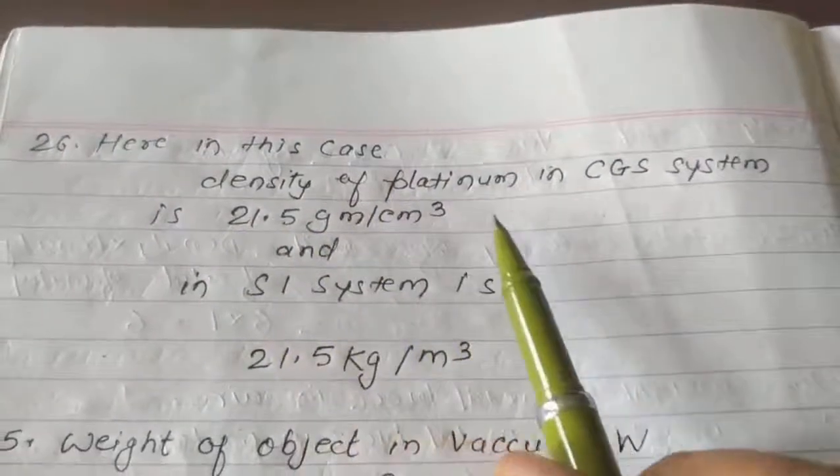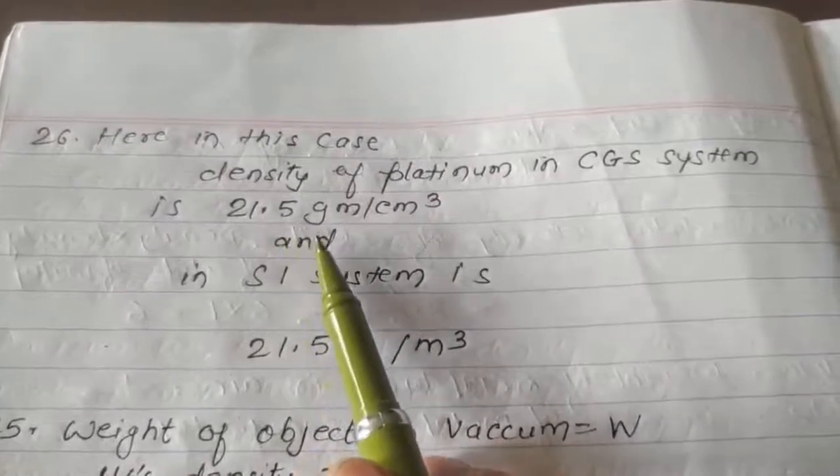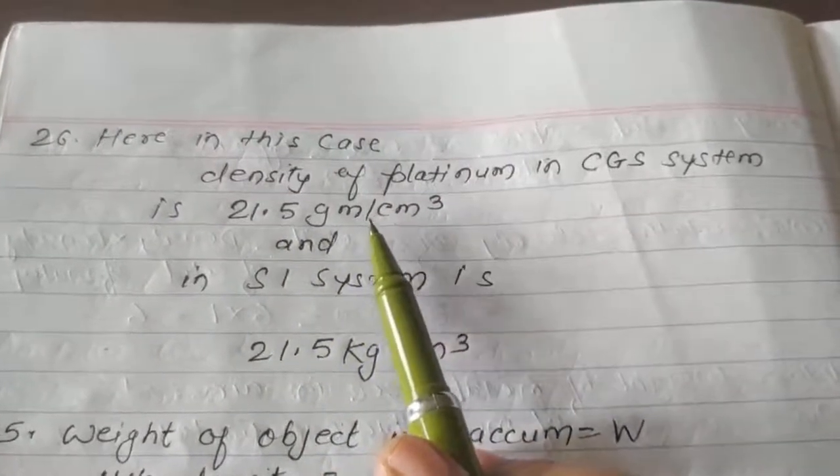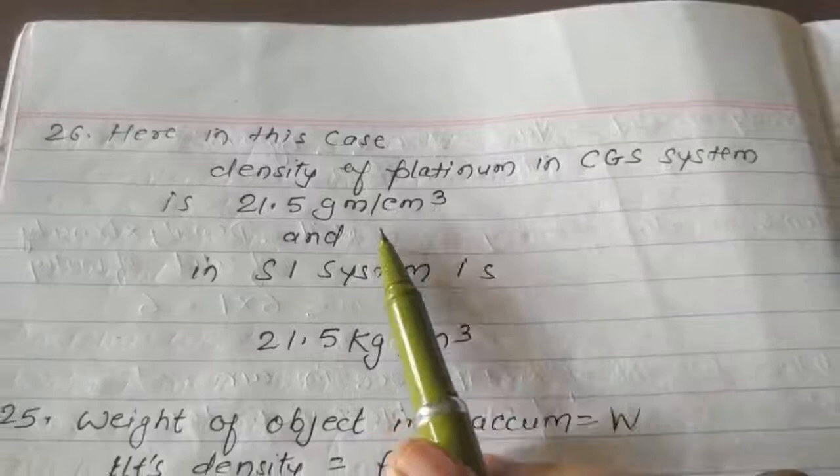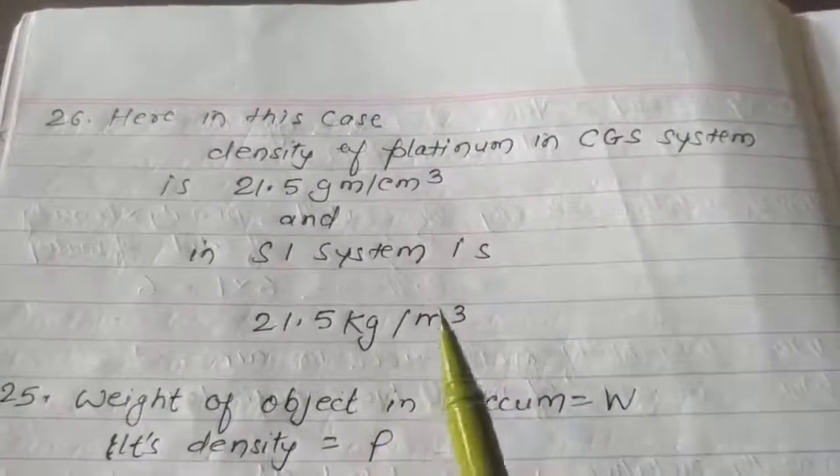Here in this case, density of platinum in CGS system is 21.5 gram per centimeter cube and in SI system it is 21.5 kg per meter cube.